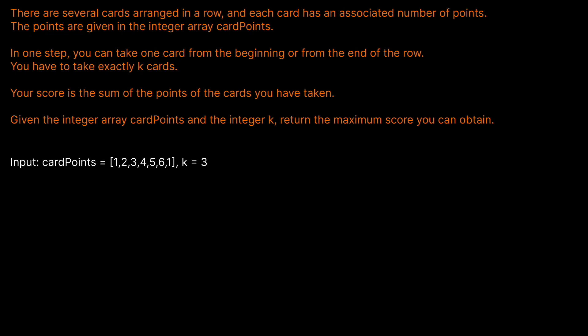Let's read the question prompt. There are several cards arranged in a row and each card has an associated number of points. The points are given in the integer array card points. In one step, you can take one card from the beginning or one card from the end of the row. You have exactly k cards. Your score is the sum of the points of the cards you have taken. Given the integer array card points and the integer k, return the maximum score you can obtain.